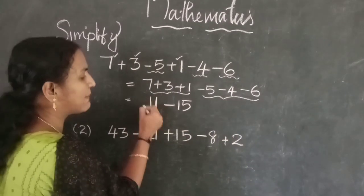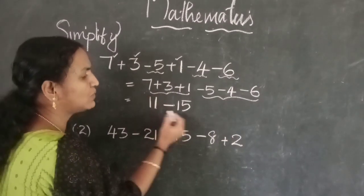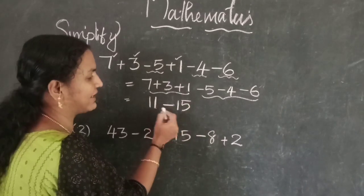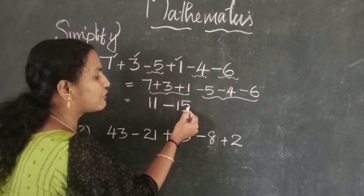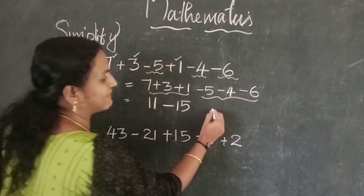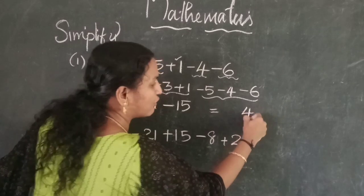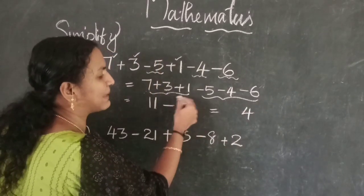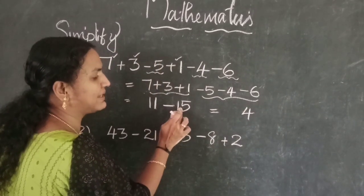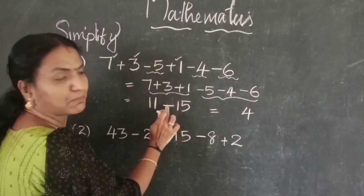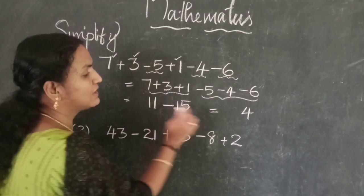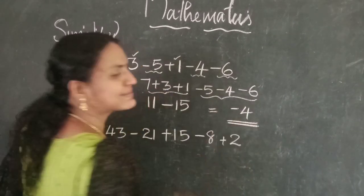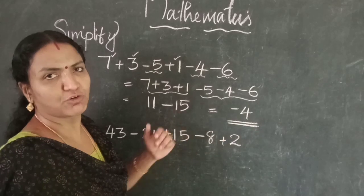Here one number is positive (11) and the second is negative (15), so take the difference: 15 minus 11 is 4. The bigger number is 15, which is negative, so the sign is minus. The answer is minus 4.